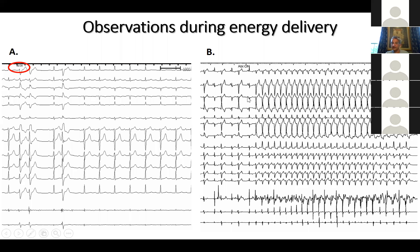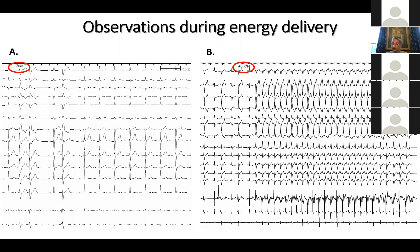Here's another scenario where when you come on ablation at the site of earliest activation, you see a flurry of rapid monomorphic VT which is very similar to the clinical arrhythmia. I tell my lab staff all the time that as I'm coming on, I want somebody near the defibrillator, because this is not an uncommon observation - there is a pro-arrhythmic effect of energy application. Some patients who present with Purkinje-mediated ventricular fibrillation can actually go into VF during energy application.